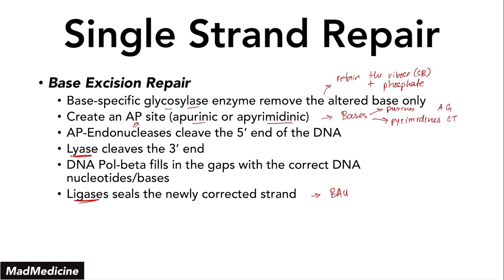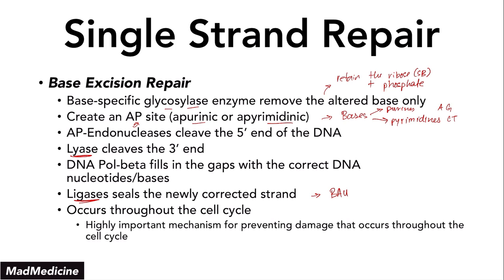Base excision repair can occur throughout the cell cycle. This is a very important mechanism for preventing damage throughout the cell cycle. The nucleotide excision repair only occurs at G1, so during the other phases — G2, et cetera — you cannot fix DNA that way. But because of base excision repair, we can fix our DNA throughout the cell cycle and manage any problems.